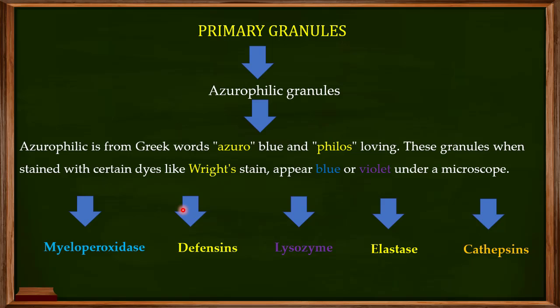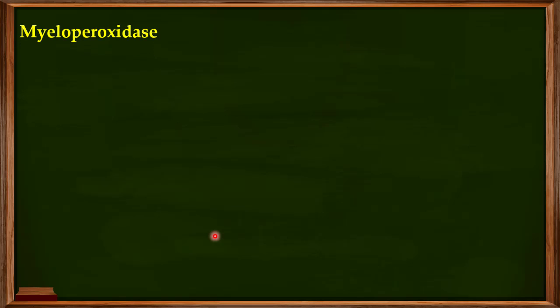Let us talk about myeloperoxidase in a little detail — how it exerts its antimicrobial properties and helps the immune system kill pathogens. Myeloperoxidase is responsible for the production of reactive oxygen species, which are one of the most potent antimicrobial agents that the body can produce.